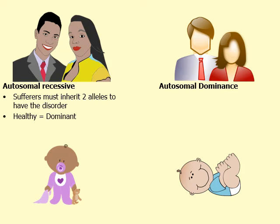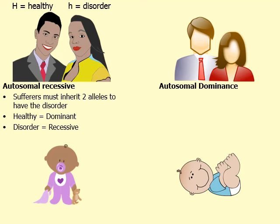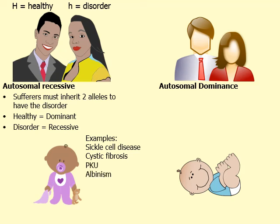This makes being healthy dominant, and having the disorder is recessive. Because healthy is dominant, I use a capital H — capital letters represent dominant alleles — and lowercase letters represent recessive alleles. Examples of autosomal recessive disorders include sickle cell disease, cystic fibrosis, phenylketonuria (abbreviated PKU), and albinism. To suffer from cystic fibrosis, you must inherit not one but two recessive alleles — one from the mom and one from the dad.